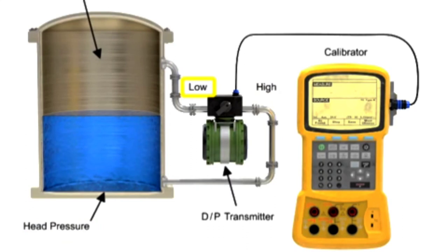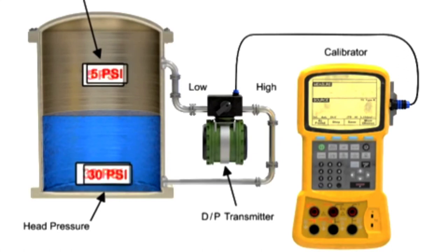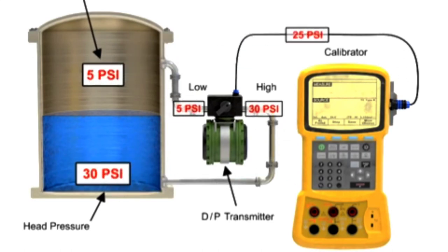The low-pressure input of the differential pressure transducer is connected to the vapor space pressure. The transducer subtracts the vapor pressure from the high pressure, resulting in a value that represents the hydrostatic head proportional to the liquid level.